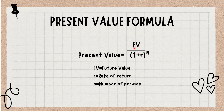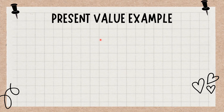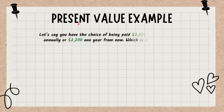To calculate present value, first input the future amount that you expect to receive in the numerator of the formula. Then determine the interest rate that you expect to receive between now and the future and plug the rate as a decimal in place of r in the denominator. After that, input the time period as the exponent n in the denominator. So if you want to calculate the present value of an amount you expect to receive in three years, you would plug the number three in for n.